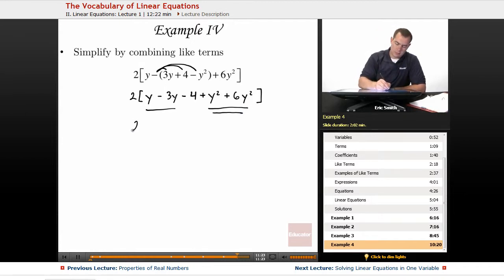Okay, so let's put those together. 1y minus 3y would be minus 2y. I have a 4 hanging out by itself, so minus 4. Y squared plus 6y squared would be a plus 7y squared.